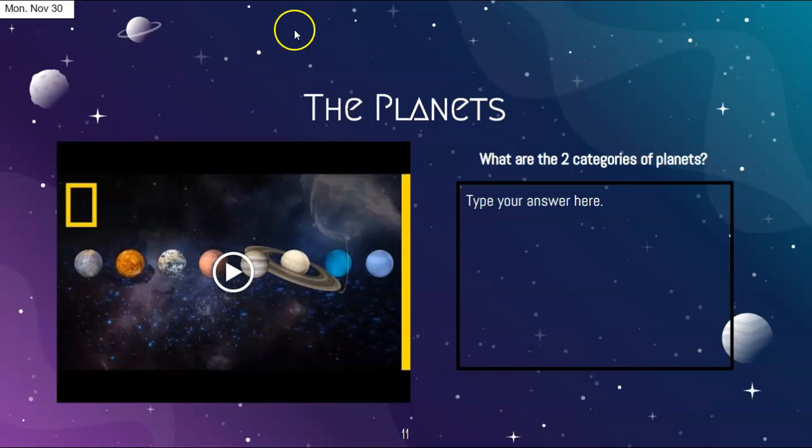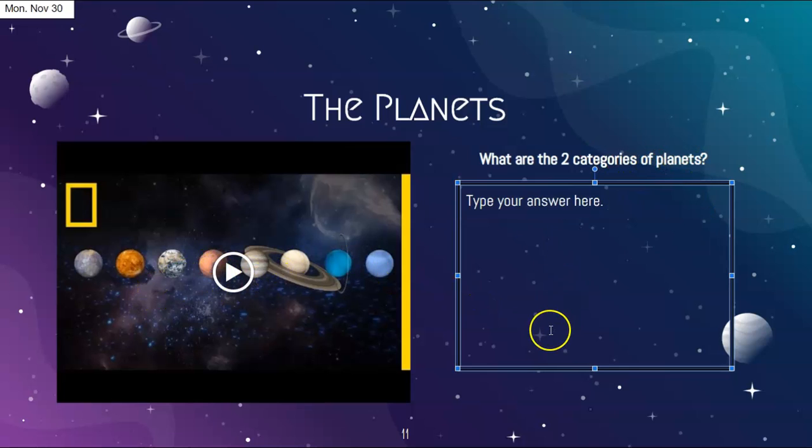And then what you actually need to write before you turn in today is what are the two categories of planets. So you've got a quick little video right there. And don't just write they are blah, blah, blah, blah. Don't just give me a simple answer. Tell me about them. Smaller planets. What are they called? Why? The larger planets. What are they called? Why?